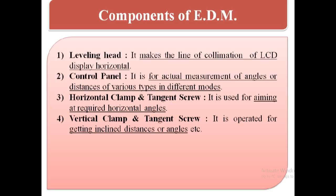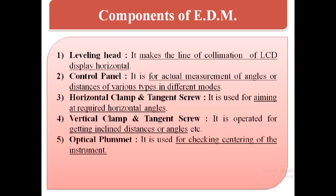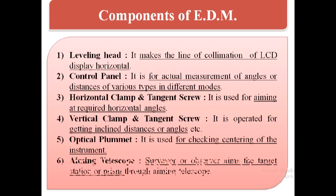4. Vertical clamp and tangent screw — it is operated for getting inclined distances or angles. 5. Optical plummet — it is used for checking centering of the instrument. 6. Aiming telescope — the surveyor or observer aims the target station or prism through the aiming telescope.